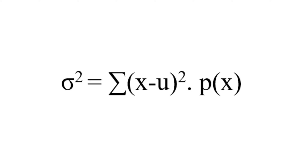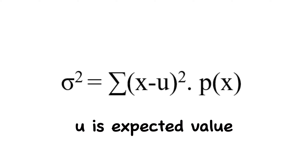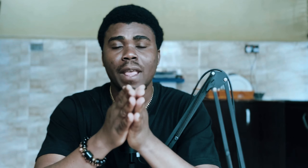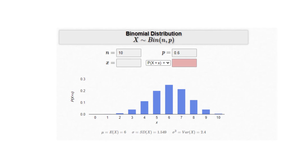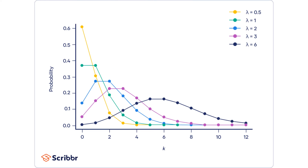The formula for the variance of a discrete probability distribution is: Var(X) = Σ (x − μ)² · P(x), where μ is the expected value, and the standard deviation is the square root of the variance. There are several types of discrete probability distributions: the Bernoulli distribution, the binomial distribution, the Poisson distribution, and the hypergeometric distribution, each having a PMF, expected value, variance, and standard deviation.